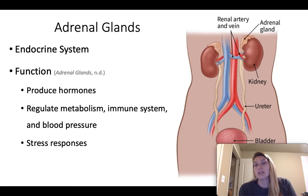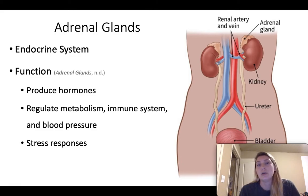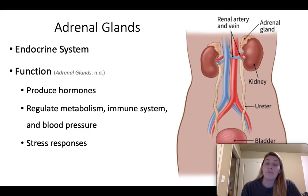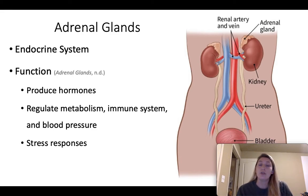Next are the adrenal glands. The adrenal glands are part of the endocrine system — they sit superior to the kidneys and have quite a few functions. The main one is to produce hormones such as cortisol, norepinephrine, epinephrine, and aldosterone, among others. They also regulate metabolism, the immune system, and blood pressure. They are responsible for stress responses because they release norepinephrine and epinephrine — the fight-or-flight hormones — as well as cortisol, known as the stress hormone.